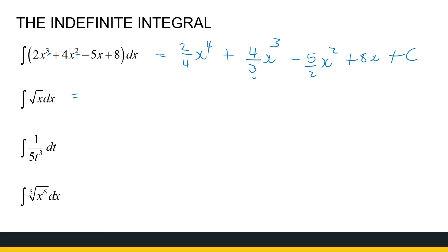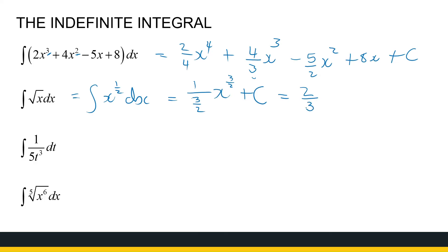For the square root of x, rewrite it as x to the power one half, since my rule requires this form. Adding 1 to one half gives 3 over 2, so the integral is 1 over (3/2) times x to the power 3 over 2 plus c. But 1 over (3/2) is too messy — that's the same as 2 over 3. So we get 2 over 3 times x to the power 3 over 2. When you have a fraction in the denominator, multiply by the reciprocal instead.